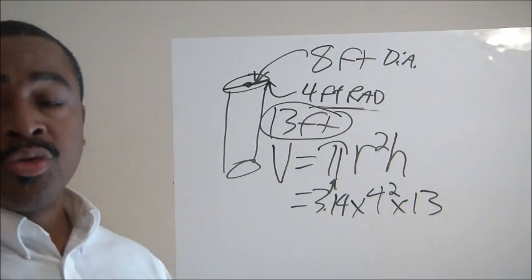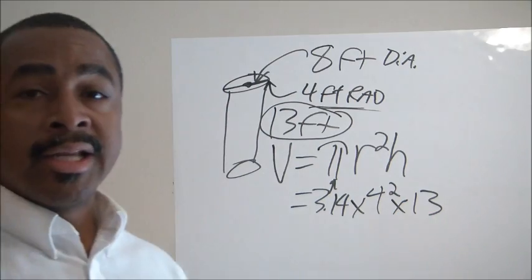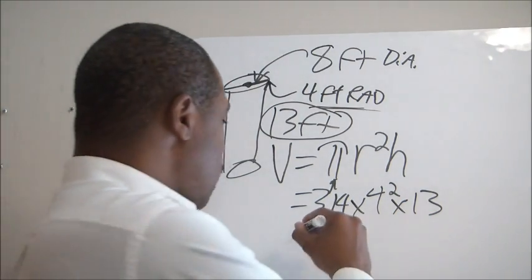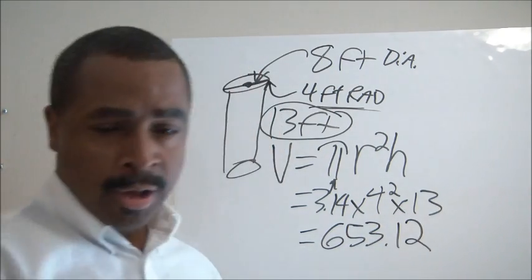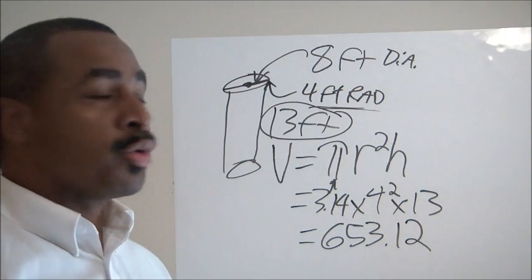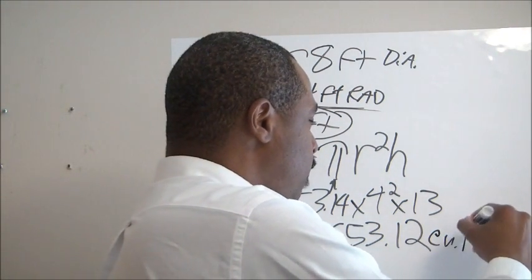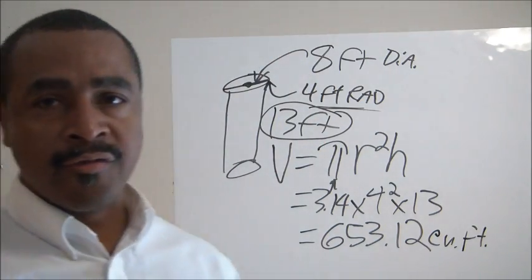So now all we do is simply do this math. 3.14 times 4 squared times 13, and I've already done the math just so I could move through this video quickly. That's going to give us 653.12. 653.12 cubic feet of helium is what it will take to fill this balloon.